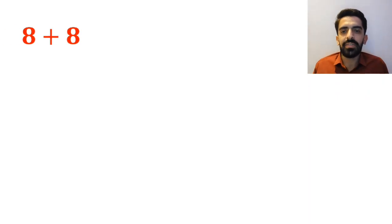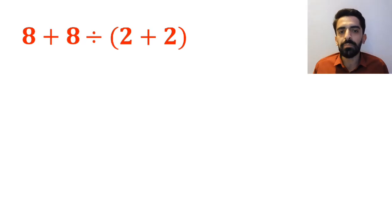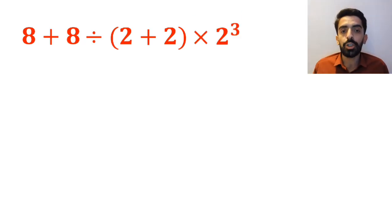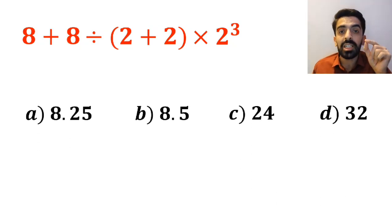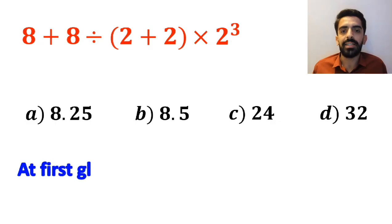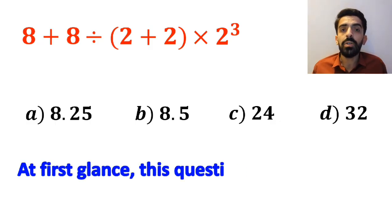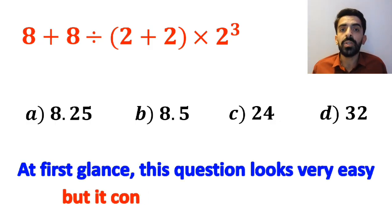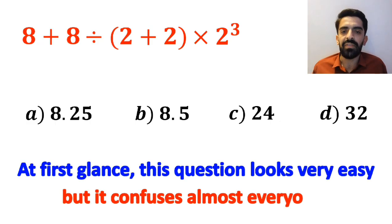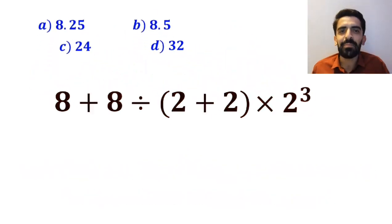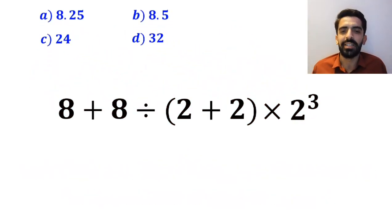What do you think is the value of the expression 8 plus 8 divided by open parenthesis 2 plus 2 close parenthesis, then times 2 to the power of 3? Which option do you think is the correct answer to this question? At first glance, this question looks very easy, but it confuses almost everyone. Let's dive in and break it down step by step together.